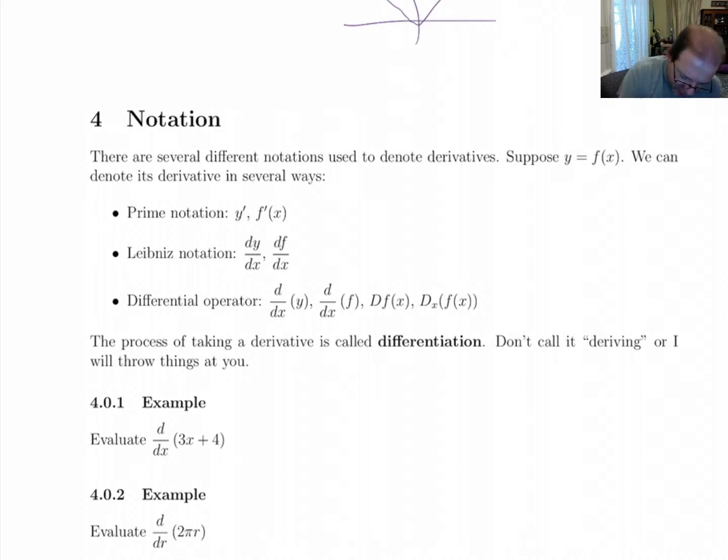We've also got this down here called the Leibniz notation, where it's dy/dx and df/dx. And those are useful because in the prime notation, it doesn't really tell you much about the variables.